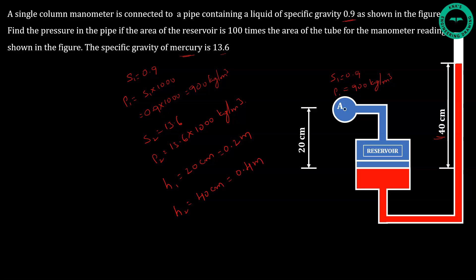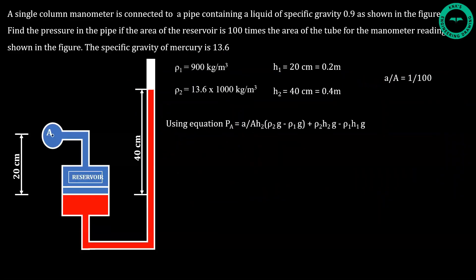Using the equation PA = (a/A) × h2 × (rho2 × g − rho1 × g) + h2 × rho2 × g − h1 × rho1 × g, and substituting all values, after calculation we get PA = 52,134 N/m², which can also be written as approximately 5.21 N/cm². So the pressure at A equals 5.21 N/cm².